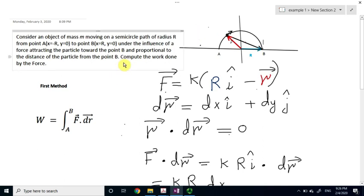And what is left is to find, look at the last sentence, compute the work done by the force. So we need to find the work of the force as the particle travels from point A, the beginning to the end, point B, along the semicircle path.